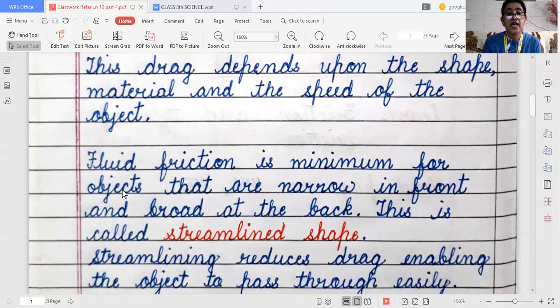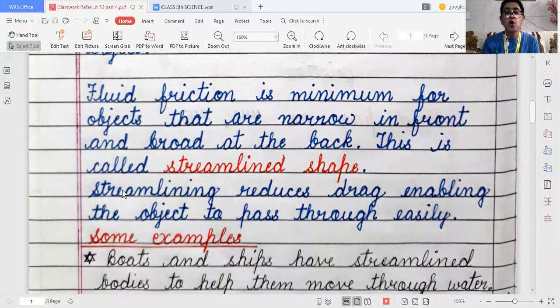Fluid friction can be minimized by a structure or shape which is narrow in the front and broad at the back. This is called streamline shape. Streamlining reduces drag, enabling the object to pass through them easily.